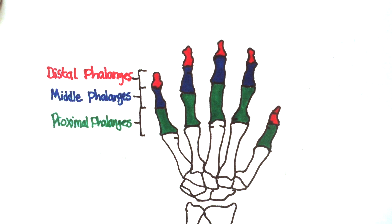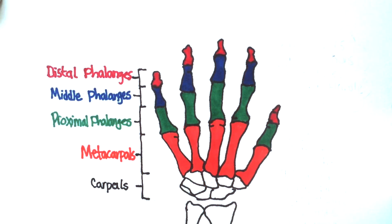So the phalanges are separated into distal, middle, and proximal, and you'll notice the thumb only has distal and proximal. The next bones are the metacarpals, and finally we have the carpal bones, which are the wrist bones.